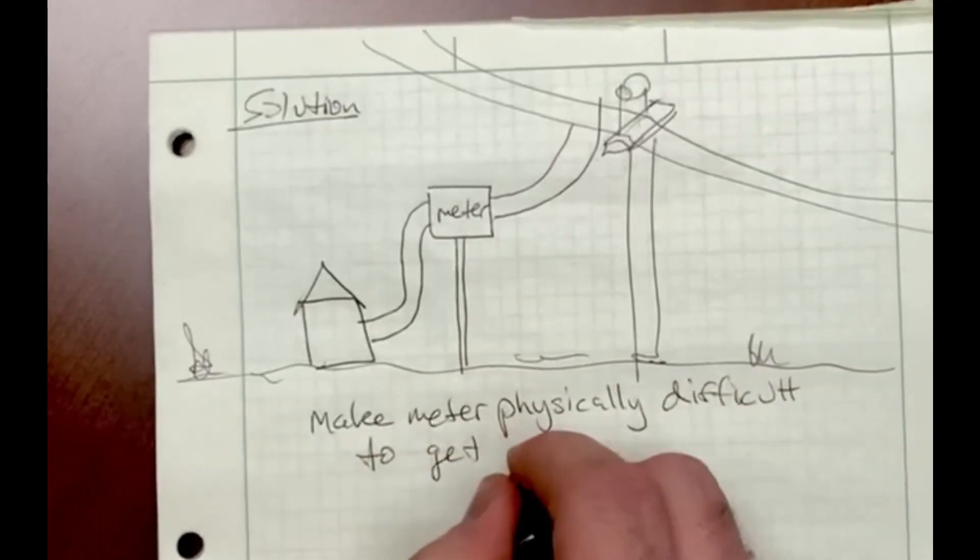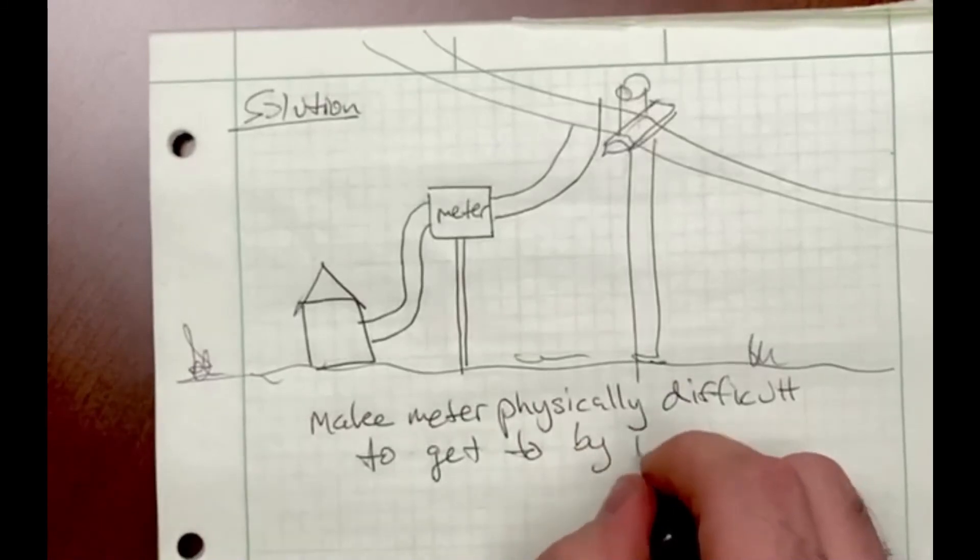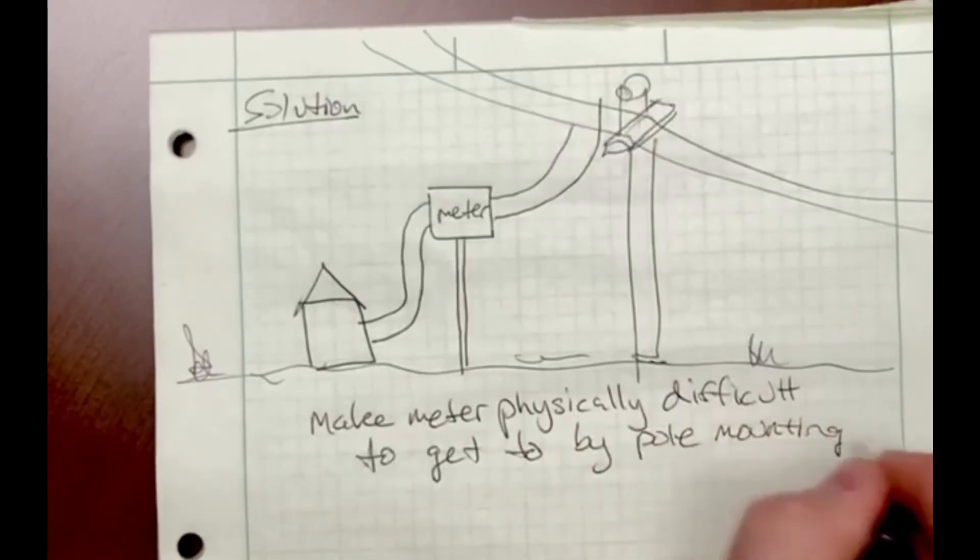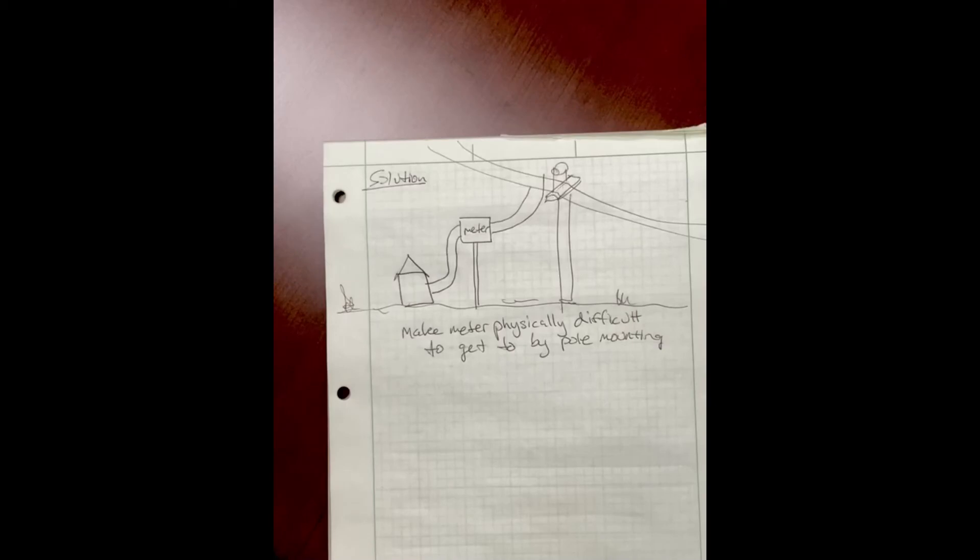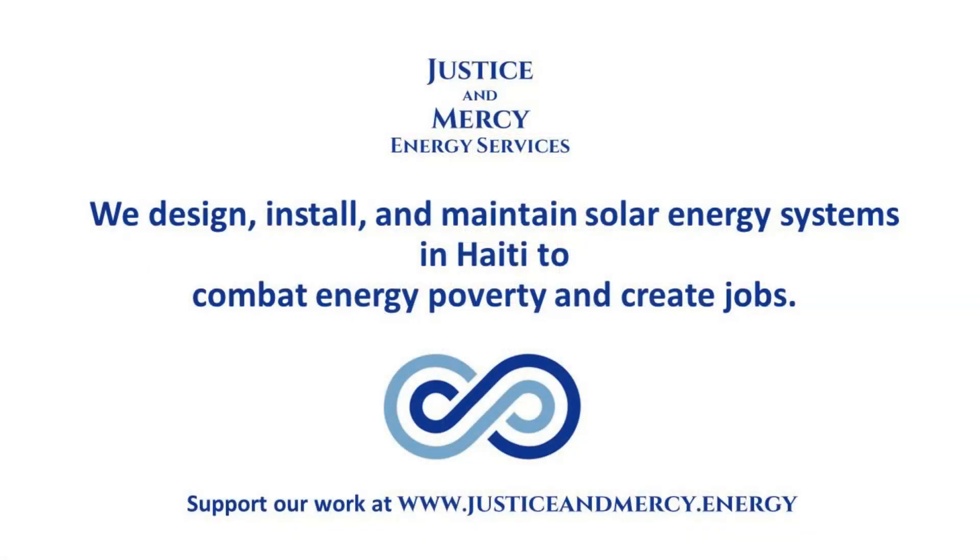One way to get around this is to make the meter physically difficult to get to. In other words, instead of mounting it on the side of a home, it might be better to mount it on a tall pole, which would make it difficult to access.